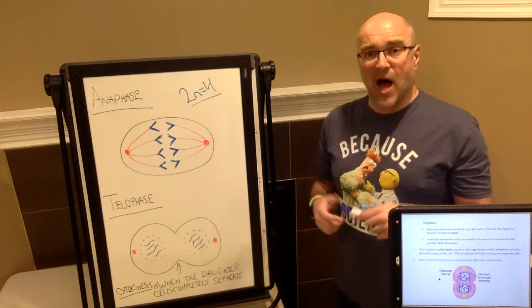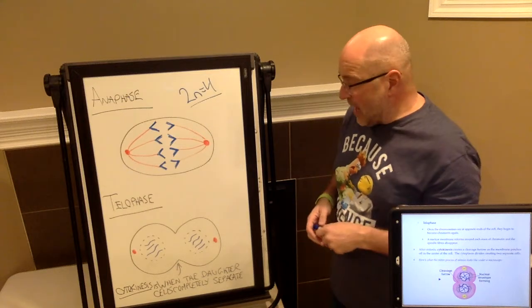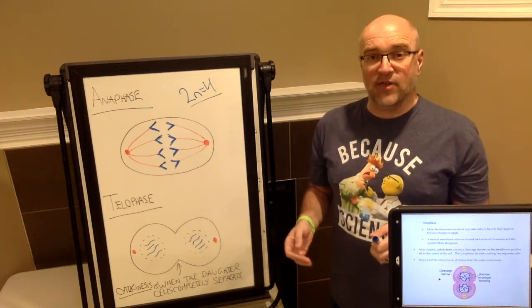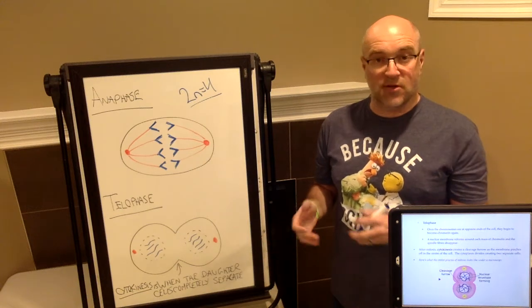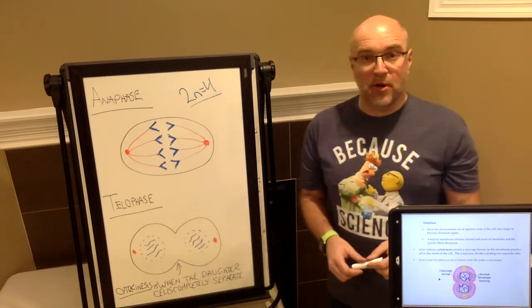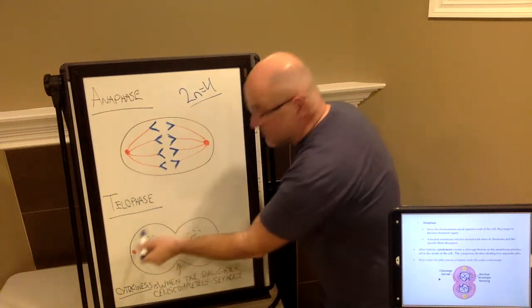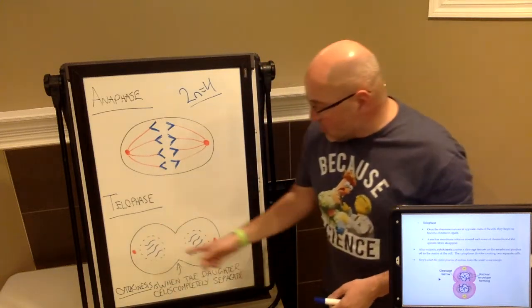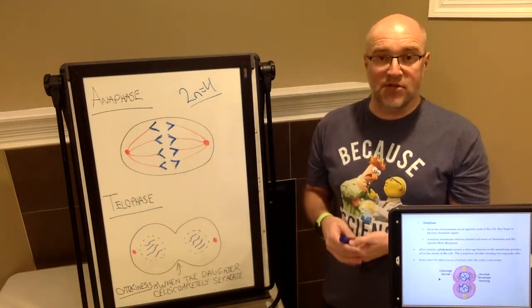Which brings us to the final stage of mitosis, which is telophase. Telophase is essentially the opposite of prophase. What's going to happen in telophase is the spindle apparatus are going to disappear. The centrals will begin to disappear as well. You are going to see the reformation of the nuclear membrane, and you are going to see the decondensing of the genetic material.